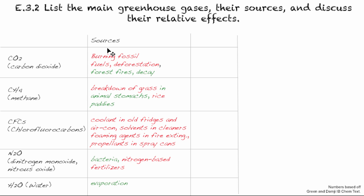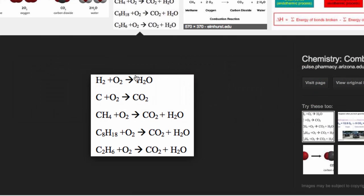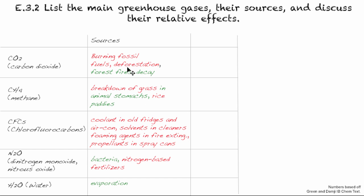In terms of CO2, obviously burning. Here are some common combustion reactions: burning coal produces CO2; this is natural gas or methane being burned; and this would be more like your fuel — octane. So those types of combustion reactions are causing CO2 emissions.